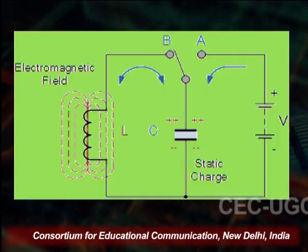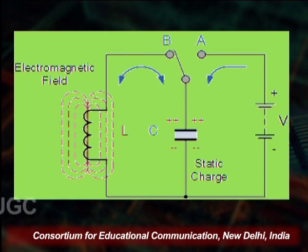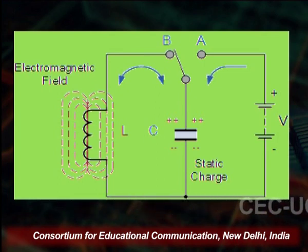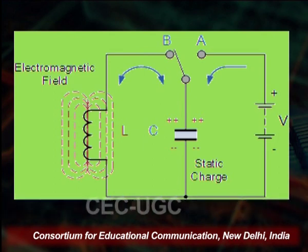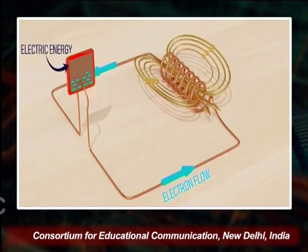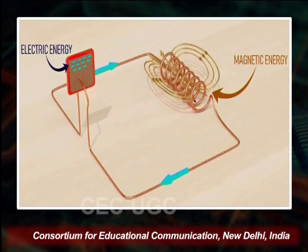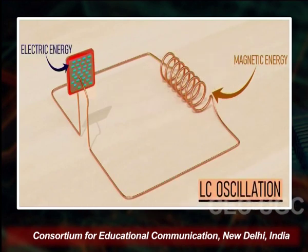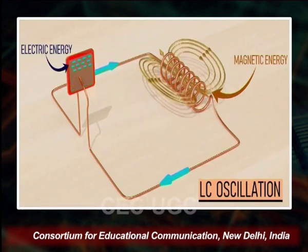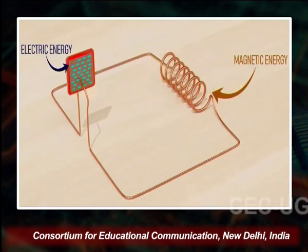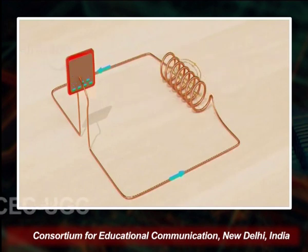As shown on screen, we have the electromagnetic field. In the animated video, there is an electron flow towards the inductor as LC oscillations take place. The magnetic energy and electric energy flow, and the output goes back towards the energy supply.